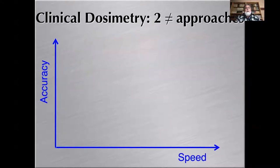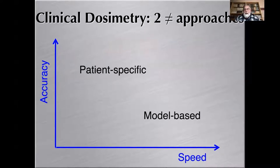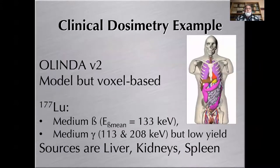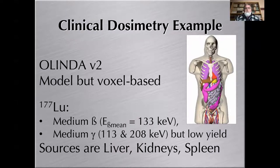All these steps must be implemented in the clinical dosimetry workflow. There are two broad approaches: model-based, used mainly in diagnostic dosimetry, and patient-specific absorbed dose assessment, used mostly in therapy. As an example, let's look at absorbed dose calculation using Olinda version 2. Olinda is based on S-values, and in version 2 those S-values are obtained from a voxel-based model. The isotope used in this theoretical example is lutetium-177.